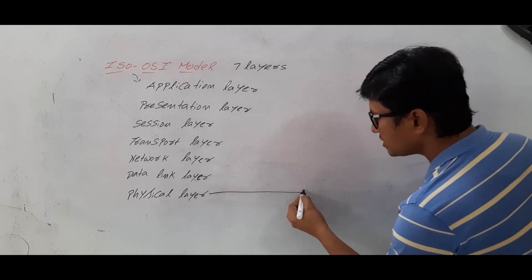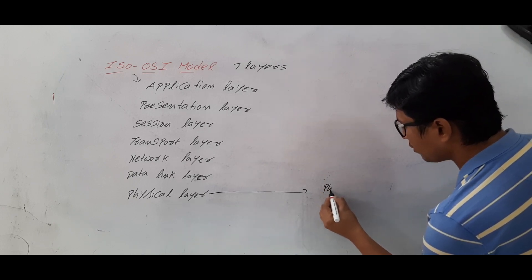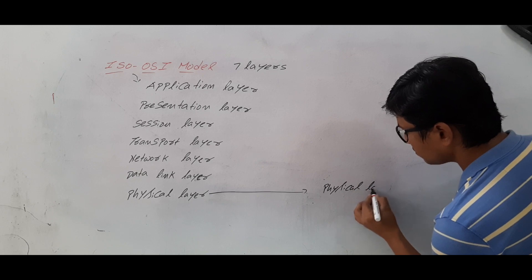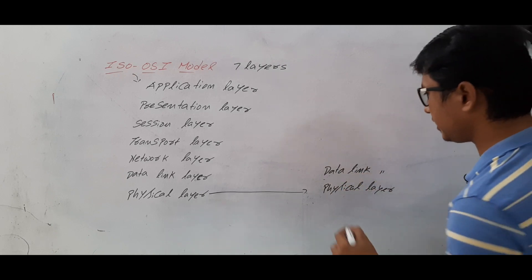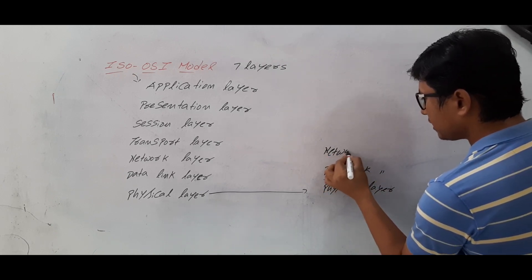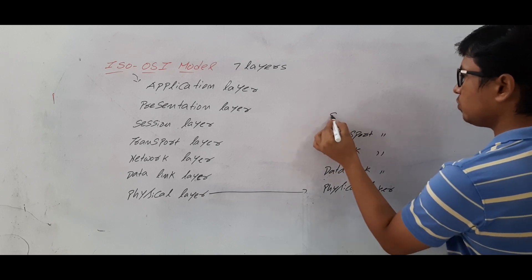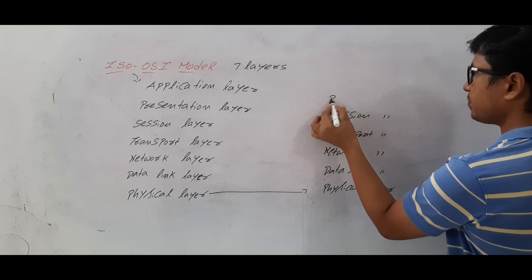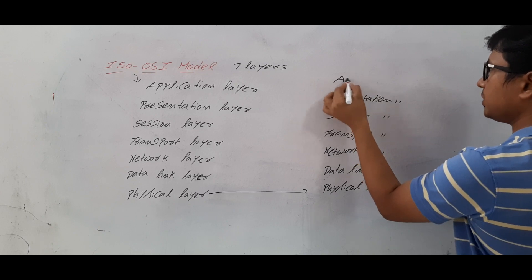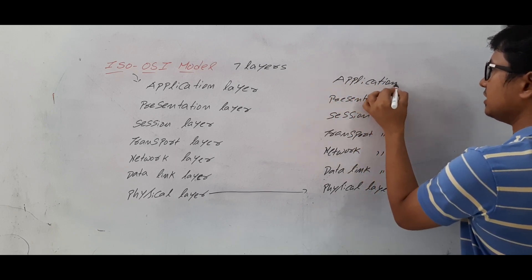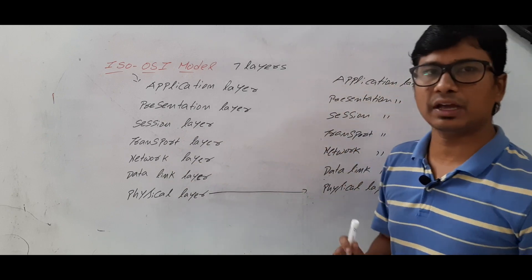Using the physical medium, the data will be transferred to the receiver. On the receiver side, again we have the same seven layers: Physical layer, Data Link layer, Network layer, Transport layer, Session layer, Presentation layer, and Application layer. So totally we have seven layers at each node — seven at the source and seven at the destination.